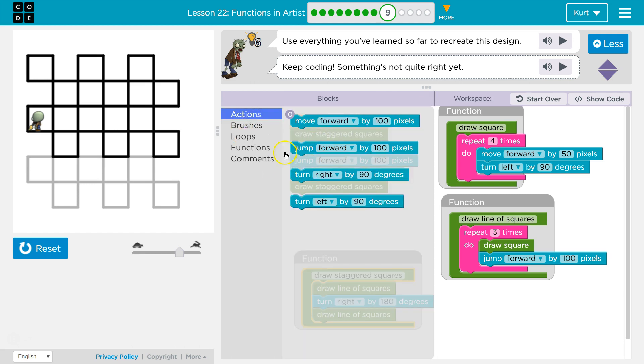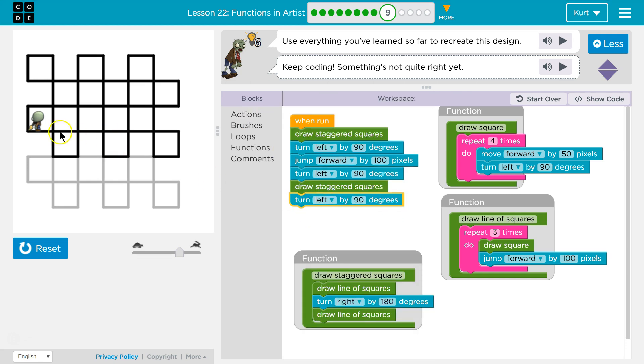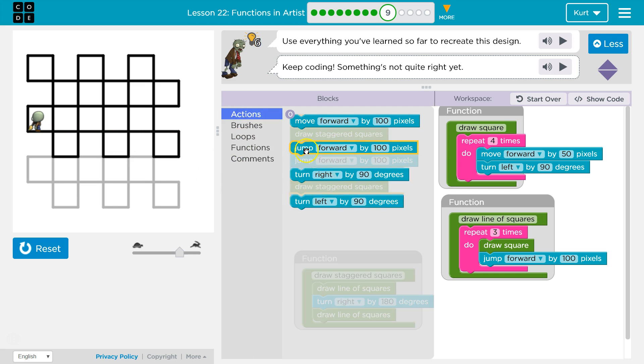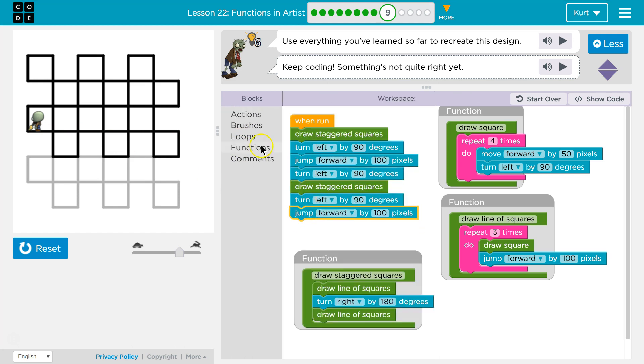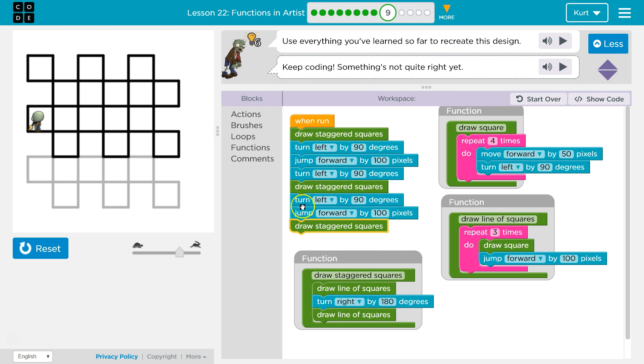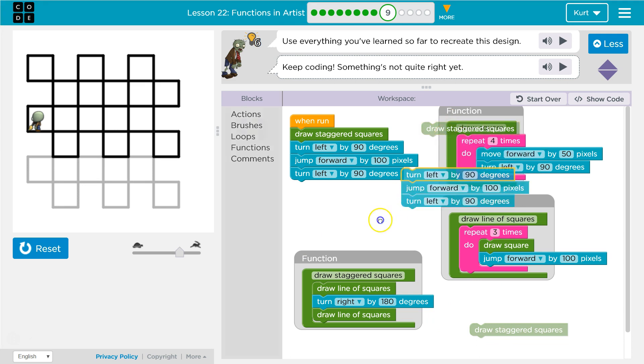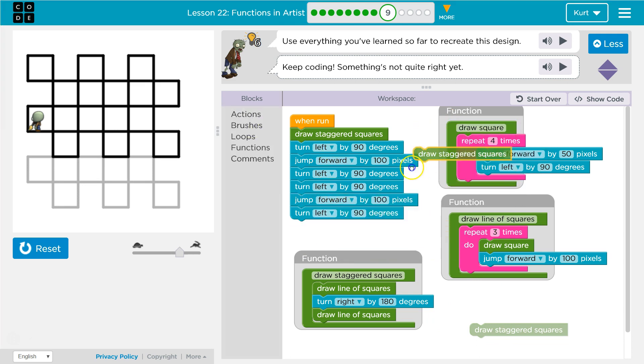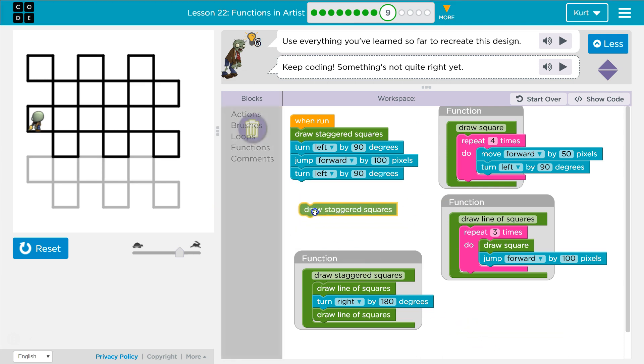Right? Because I'm going to want it at the end. And, I want to turn left by 90. I want to, actions, jump, forward by 100, and then I want to actions, function, draw staggered squares. Oh, I'm going to need to turn left again. So, I'm repeating myself, if you look at this. Right? Draw a staggered square, draw a staggered square. Oops, I just left some code behind. But, regardless, these lines are repeating themselves.